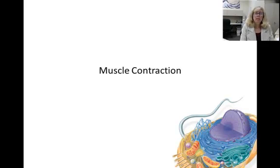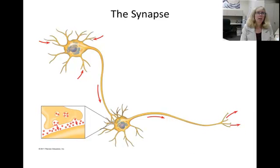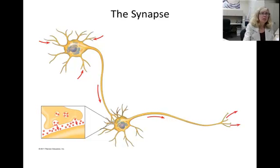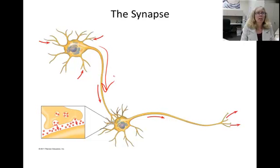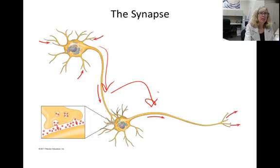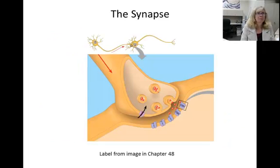Welcome everyone to the basics lecture on synapses and muscle. In our last lecture we learned about neurons, membrane potentials, and how action potentials are propagated down the axon of the neuron. Today we're going to talk about how signals move from one neuron to the next and how neurons cause a muscle contraction.